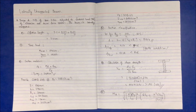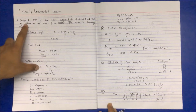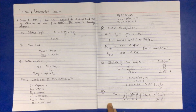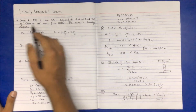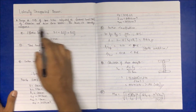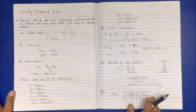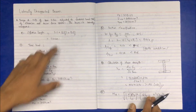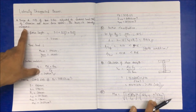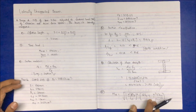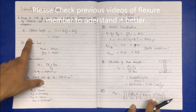In this video we will discuss the laterally unsupported beam. The problem is to design a simply supported beam of span 3.5 meters subjected to a factored bending moment of 470 kilo Newton meter and a shear force of 180 kilo Newton. The beam is laterally unsupported, and the design steps are similar to those of the laterally supported case.